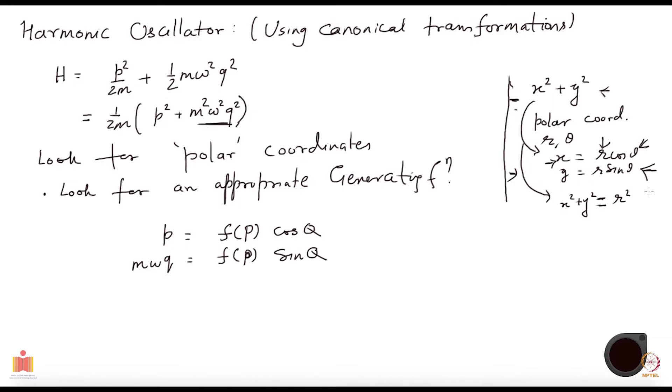This will be nice because in the new coordinates, if I could show that this transformation is canonical, then that would imply that the new Hamiltonian H prime would be same as H with the small q being expressed in capital Q and capital P, and small p being expressed in capital Q and capital P. That will be the new Hamiltonian.